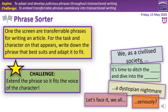Our starter task for today is a phrase sorter. On the screen are these transferable phrases for writing an article. We've got 'we as a civilized society' — that brings in an inclusive pronoun 'we' while also positioning us as good people with a well-structured framework. A good phrase you just extend: 'We as a civilized society need to be thinking about the future.' We've also got 'it's time to ditch the something and dive into the something' — a nice one to end with, because of the alliteration of 'ditch' and 'dive.' It's quite informal, lively language: 'It's time to ditch the phones and dive into the future.'